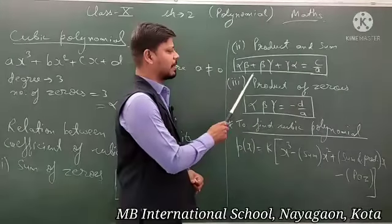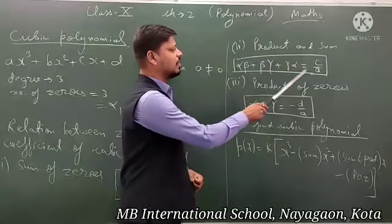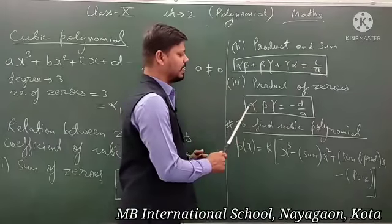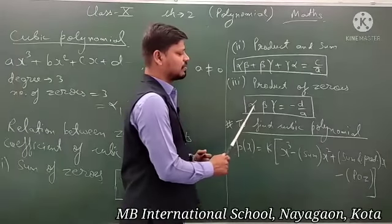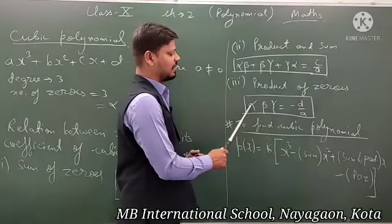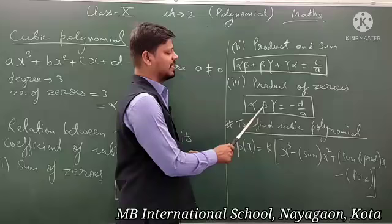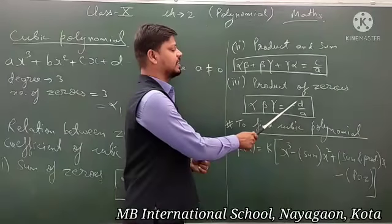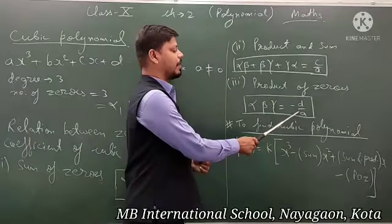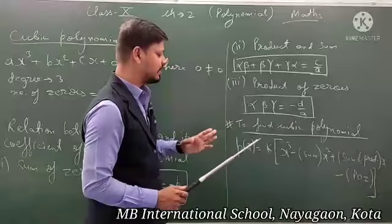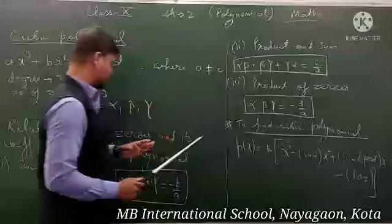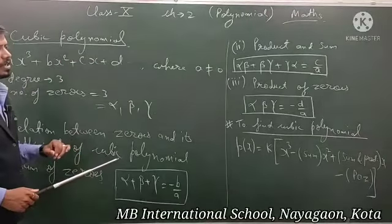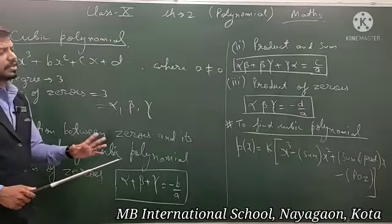Third jo relation hai woh hai product of zeros. Jo bhi zeros unka product, that is alpha × beta × gamma, unka multiplication hota hai equal to -d/a. So yeh teen relations hain aapke zeros and coefficients of a cubic polynomial.